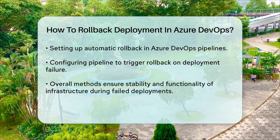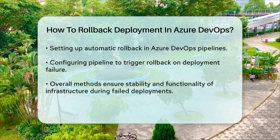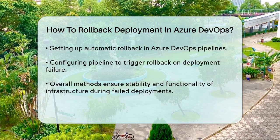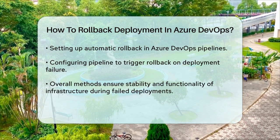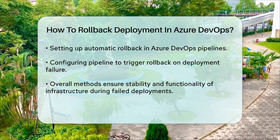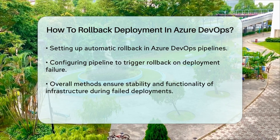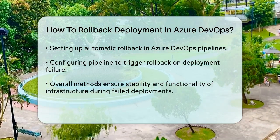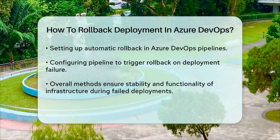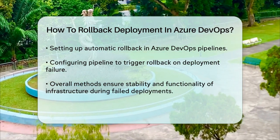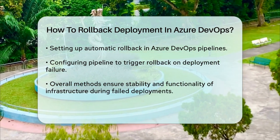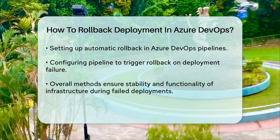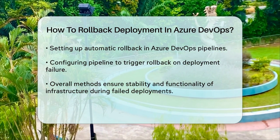In addition, you can set up automatic rollback in your Azure DevOps pipelines. This involves configuring your pipeline to trigger a rollback if a deployment fails. You can use the on.failure part of your pipeline to trigger a new run that sets the necessary parameters for the rollback. This ensures that if a deployment fails, the pipeline automatically reverts to the last known good configuration.